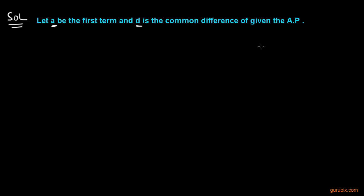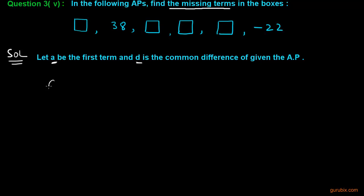Therefore, we can write the second term as a plus d, that is given 38, and sixth term a plus 5d, and that is minus 22. Let this be equation number 1 and this is equation number 2.